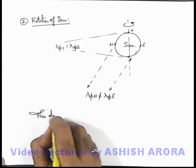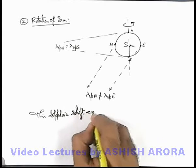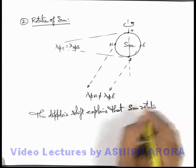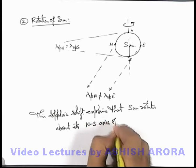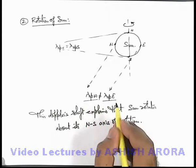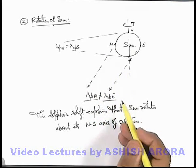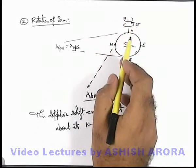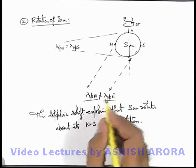So this Doppler shift explains that the sun rotates about its north-south axis of rotation. And by analyzing the apparent wavelengths which are coming from the west and east edge of the solar disk, we can also estimate the angular speed with which the sun is rotating, and we can also find out whether it is rotating from west to east or from east to west, depending on which wavelength is increased and which wavelength is decreased.